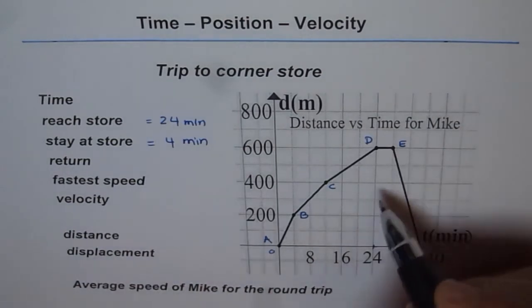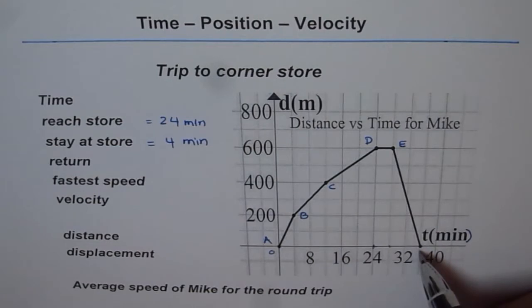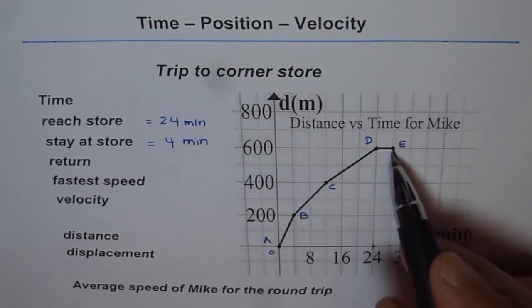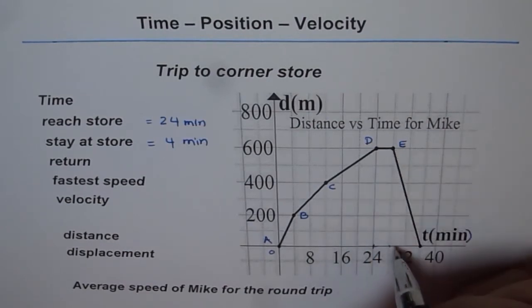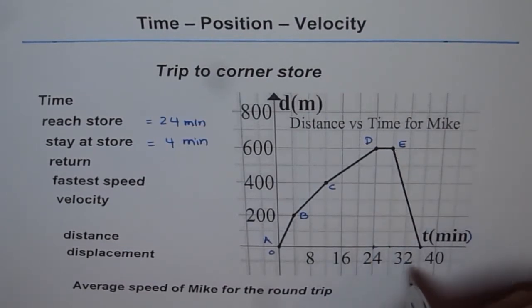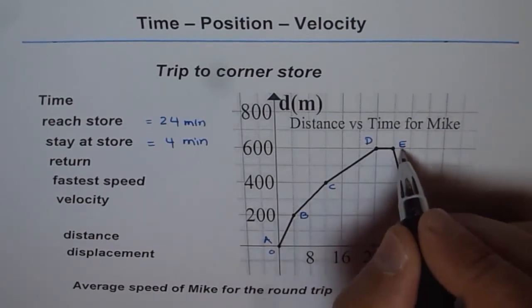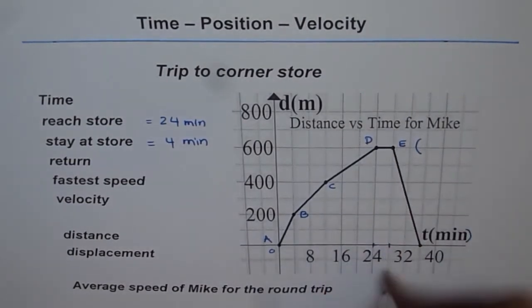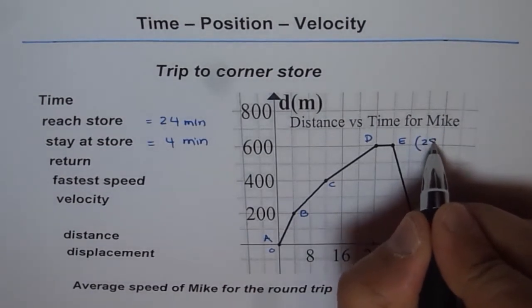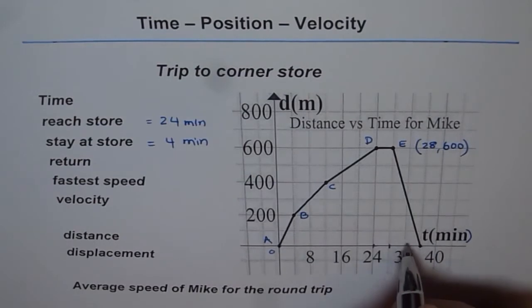Return. He returns. This is the return when the distance is decreasing. What is the speed at which he returns? Speed is change in distance over change in time. What are the coordinates of E? Let's write down the coordinates of E first. Time is 28, and distance is 600.